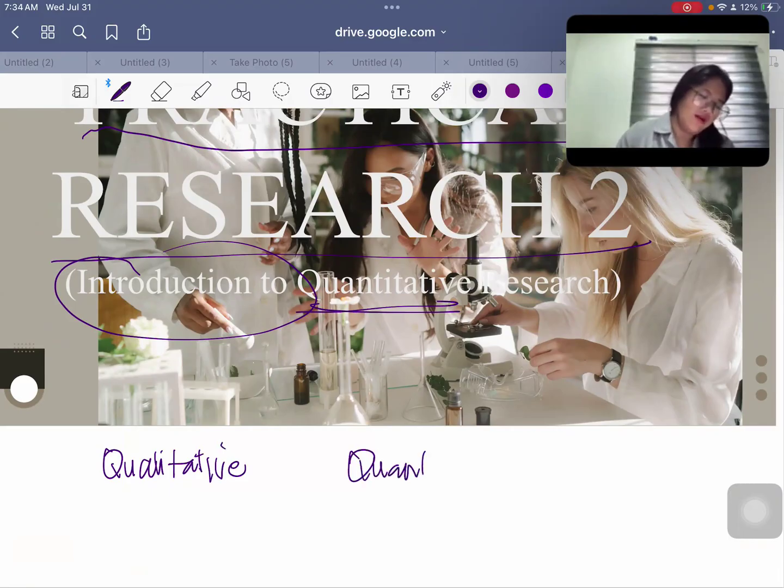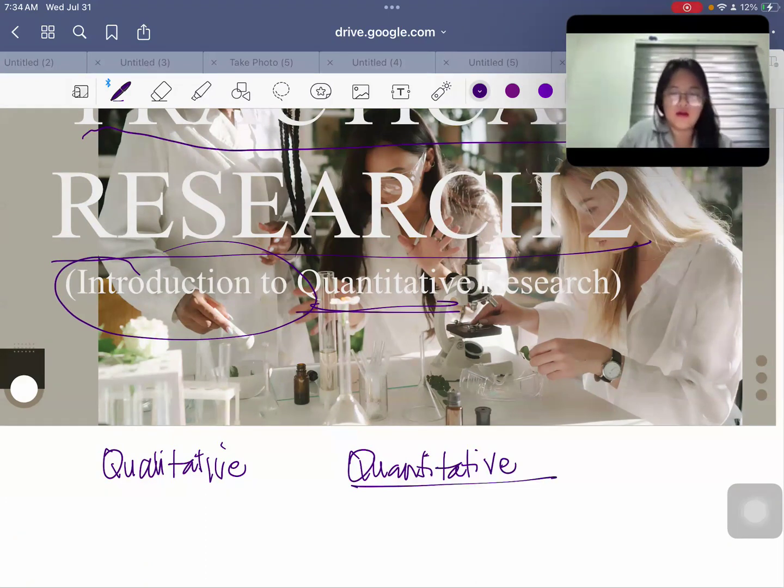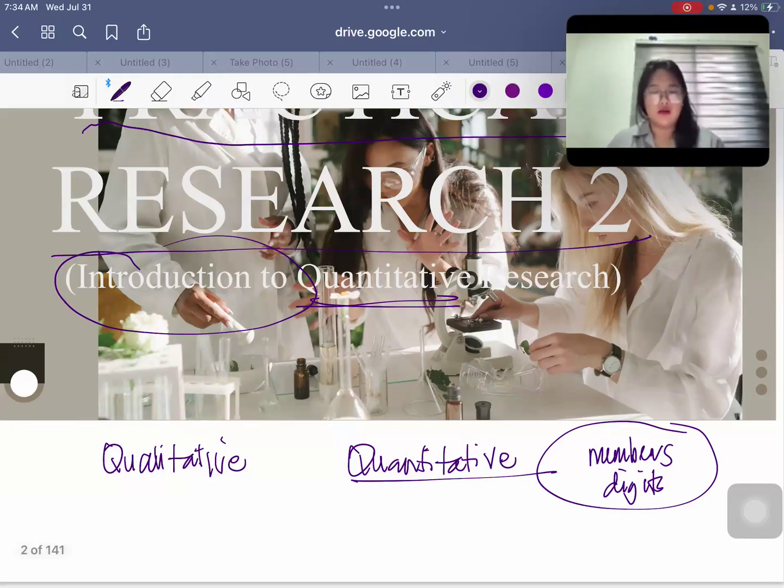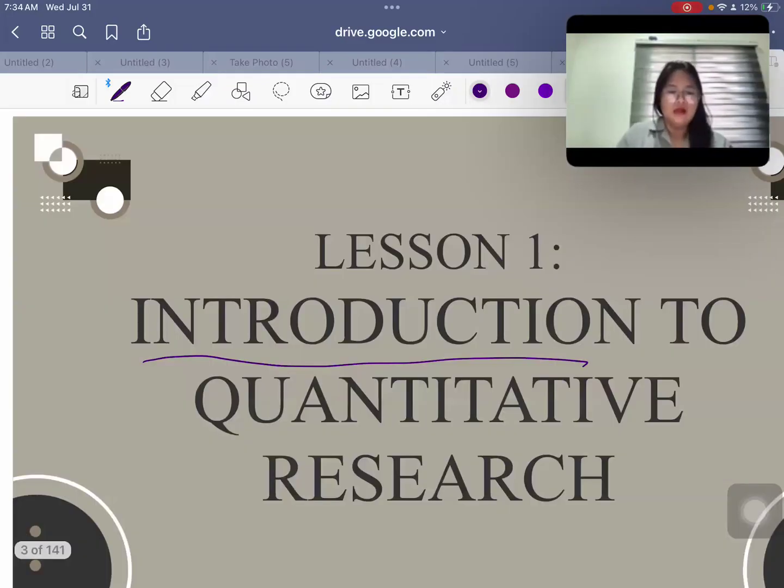So after you had your qualitative research, this time we would be moving to quantitative. So we're done with experiences, with words, with descriptions. This time, we are going to look into numbers, digits, and anything that deals with stats. So again, introduction to quantitative research.